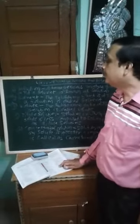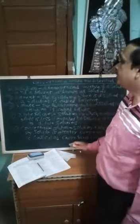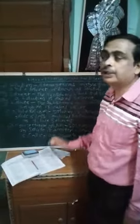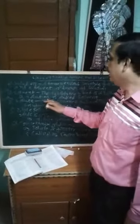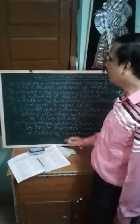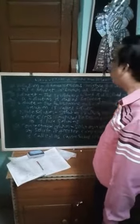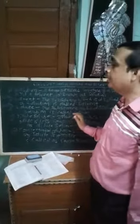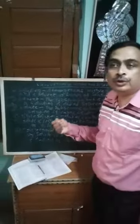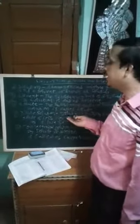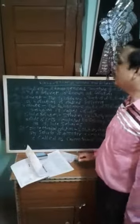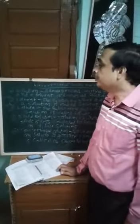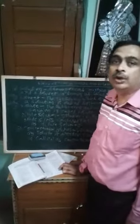First we learn what is solute and what is solvent. The substance in which another substance is dissolved is called solvent. The substance which is dissolved in a solution is called solute. For example, sugar is dissolved in water — so sugar is solute and water is solvent.